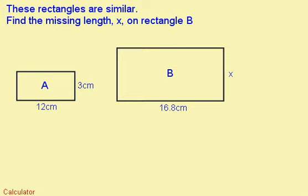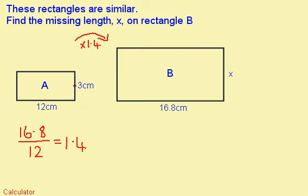Here's a question for you to try. Press pause and have a go at it. When you're ready for the answer, press play. These sides are corresponding, so the scale factor of enlargement is 16.8 divided by 12, which is 1.4. To get from this one to this one, I times by 1.4, so 3 times 1.4 is 4.2, which gives me the length of x.